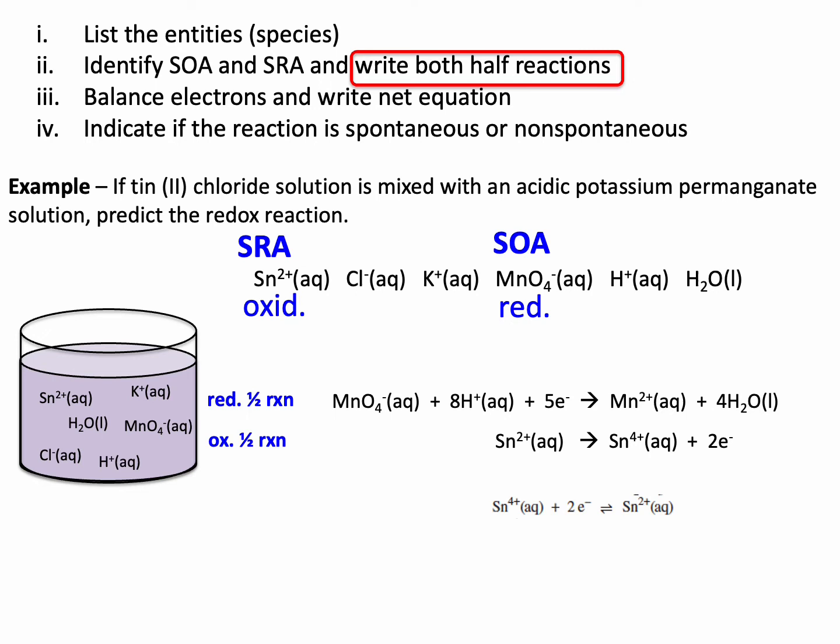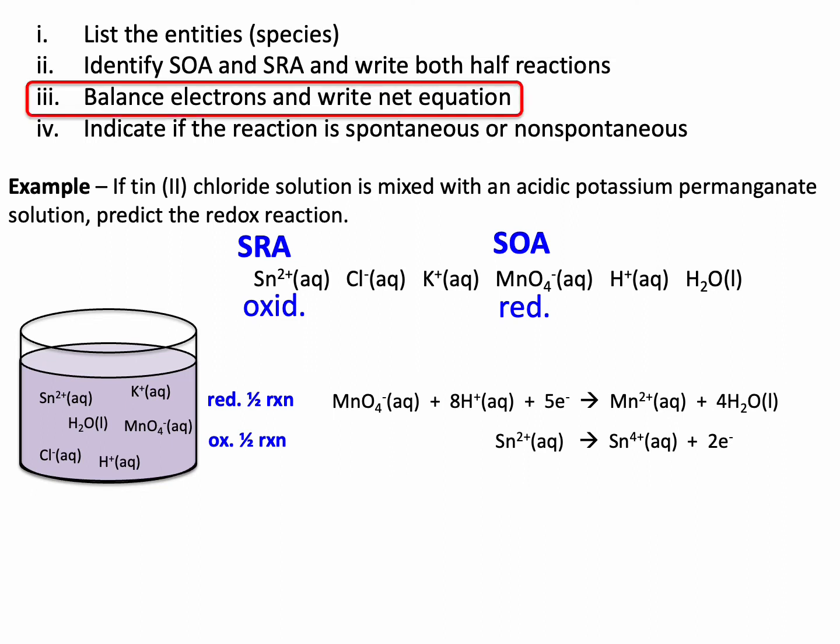I have to make Sn²⁺ on the left, or a reactant, producing Sn⁴⁺ by throwing away two electrons. Now I've just copied them right out of the book. There's my reduction half reaction, and there's my oxidation half reaction.